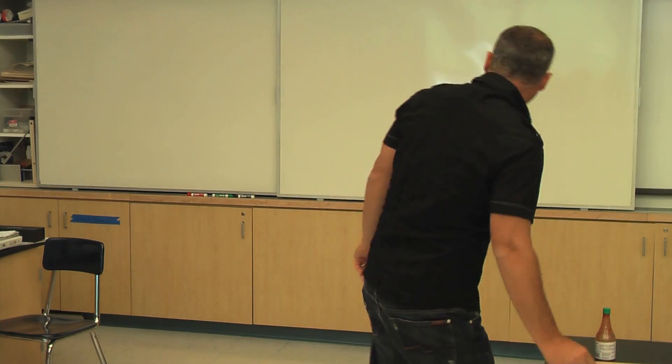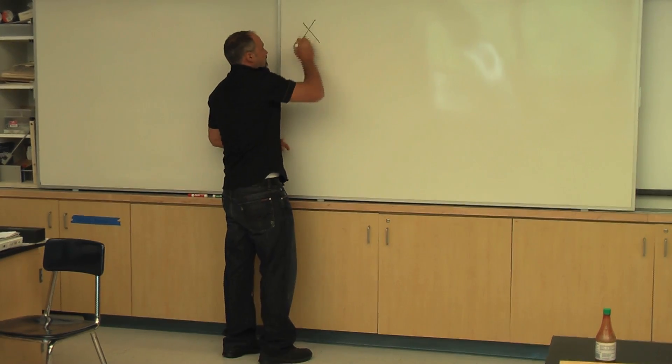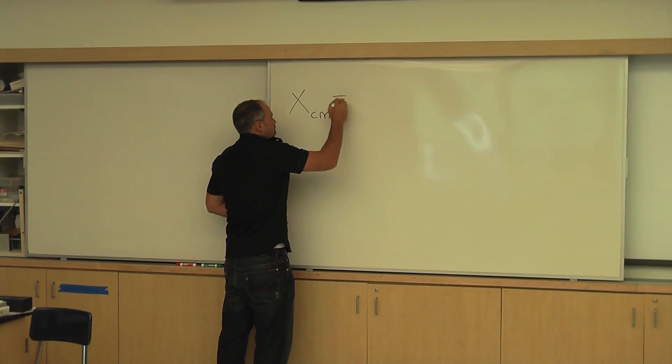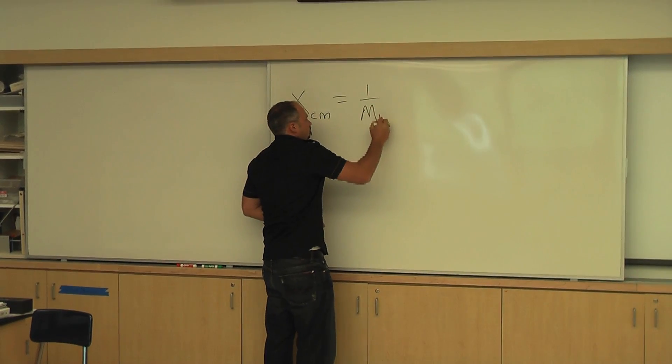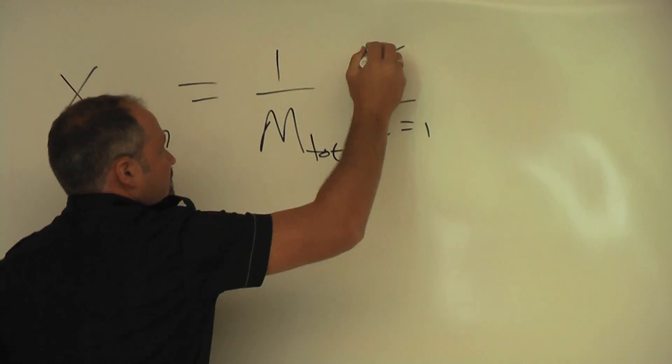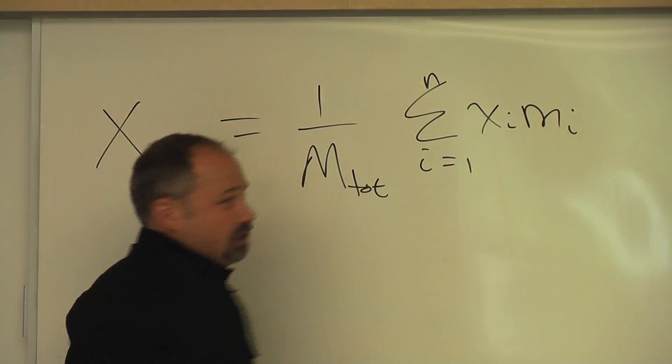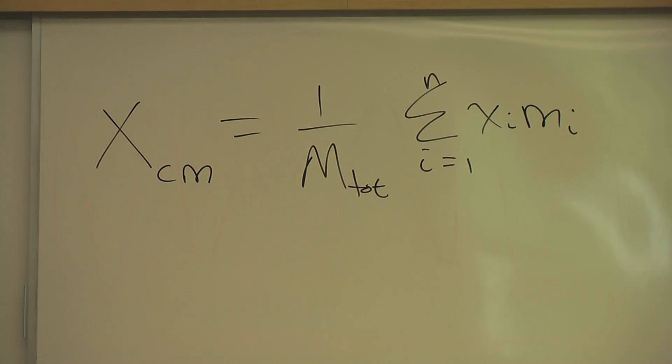Now, the formula for center of mass is this. And then we add up all the little pieces. So this is if you have more than one object. You do the same thing in the y position.